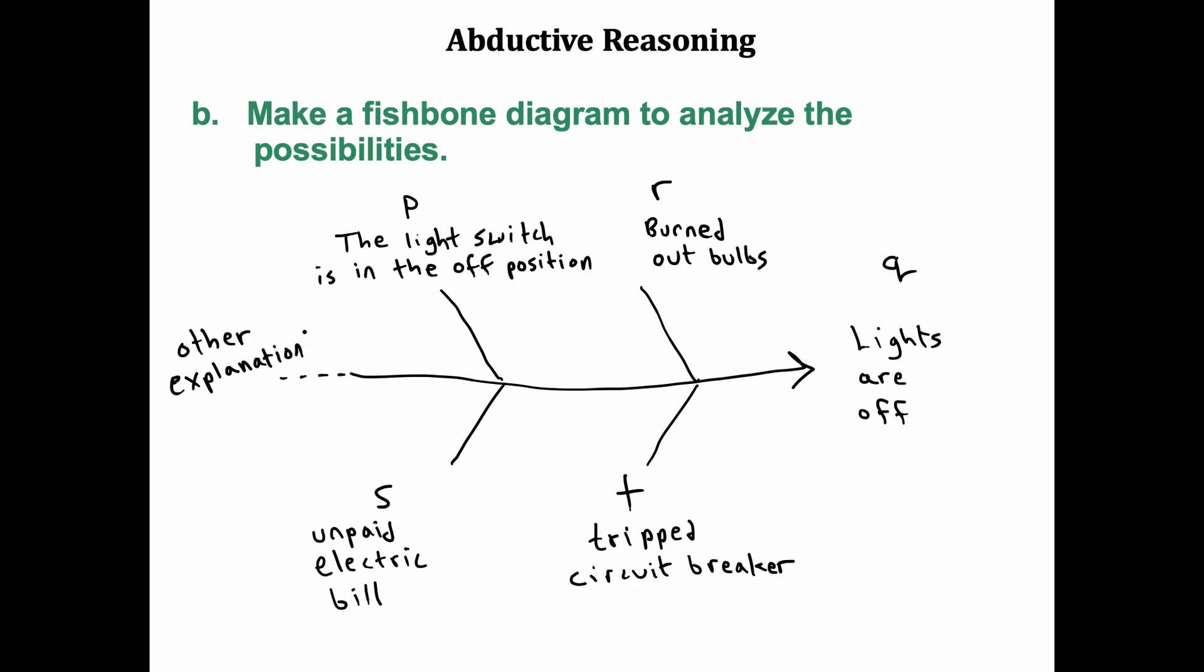The point is, we don't really know what the true cause for the lights being off is. There could be many possibilities. We might think that P is the most likely of these possibilities. And that's part of abductive reasoning. Brainstorming about the possibilities, and then selecting what you think is the most likely cause.